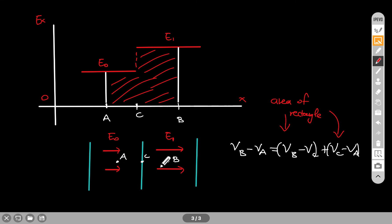And if you happen to have three different electric fields, and let's say point B was all the way here, then you would just be dividing your path from A to B into three different areas. And all of those three would be the area of a rectangle.